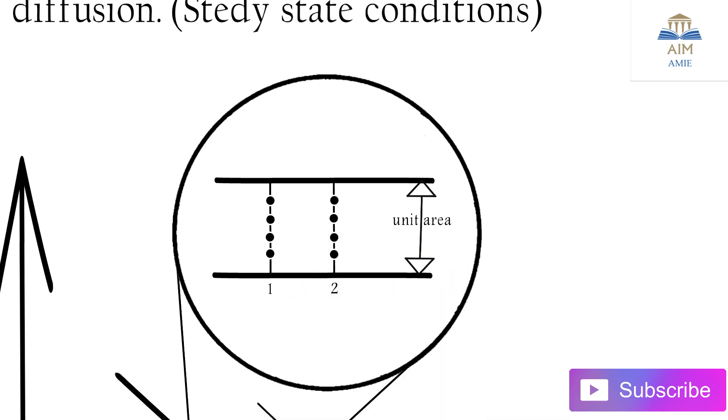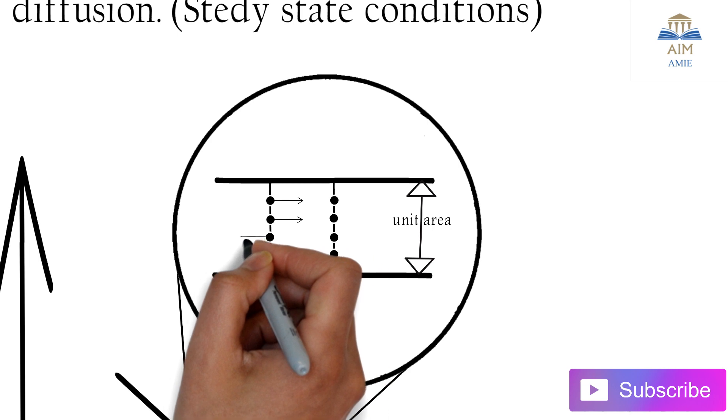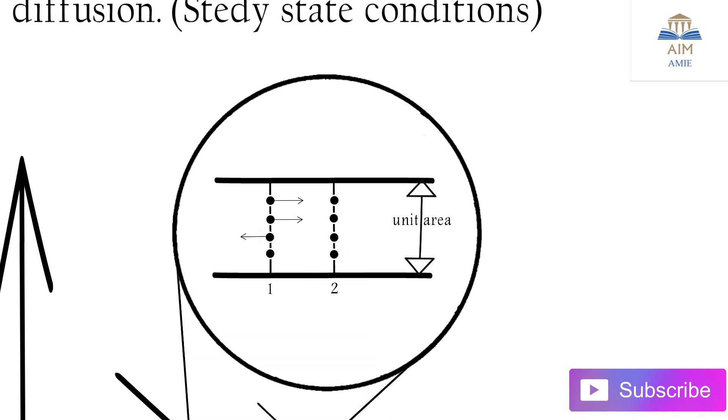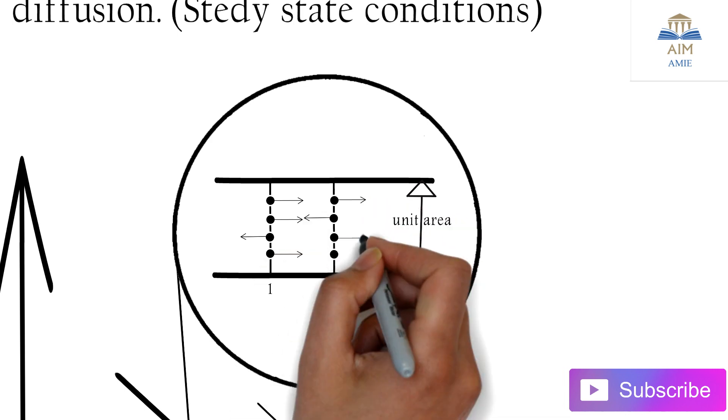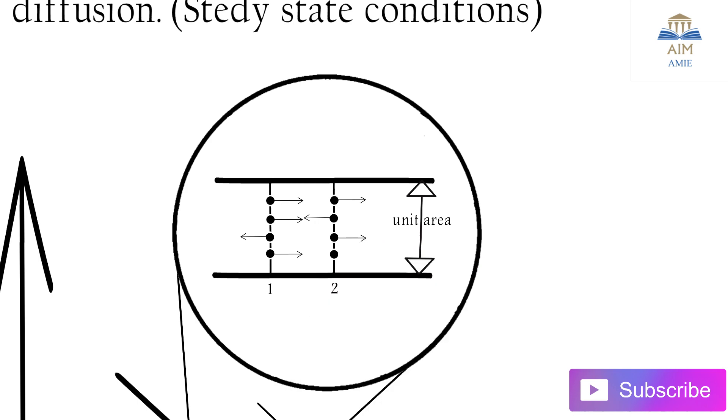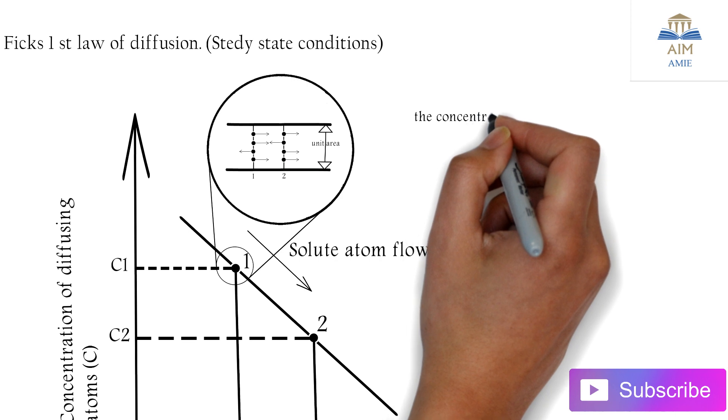These atoms tend to move in particular directions. This goes to the right, this goes to the left, this goes to the left, this also goes to right. So the net flow is from one to two.